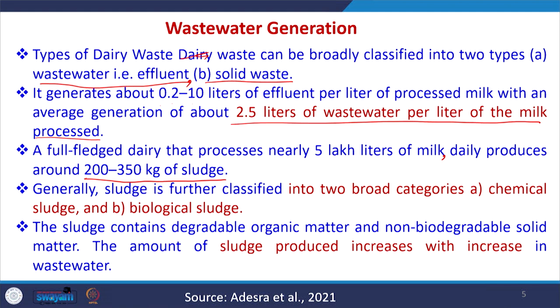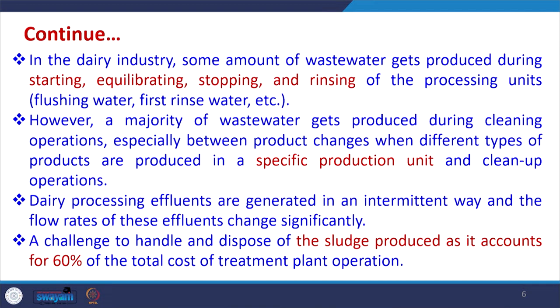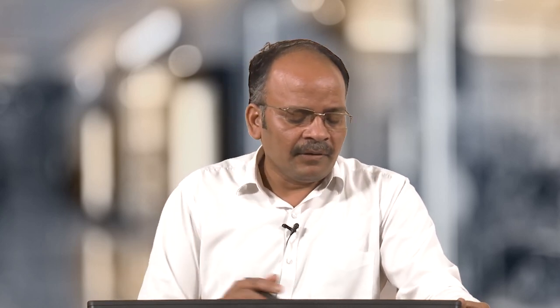The amount of sludge produced increases with the increase in wastewater. In the dairy industry, some wastewater is produced during the starting, equilibrating, stopping, and rinsing of the processing unit. However, the majority of wastewater is produced during cleaning operations, especially when the product changes between different types of products produced in a specific production unit.